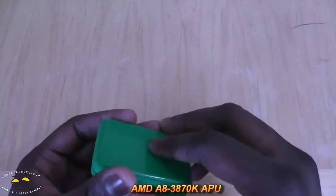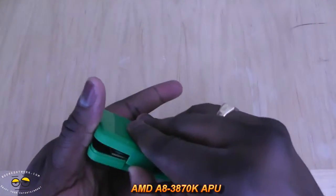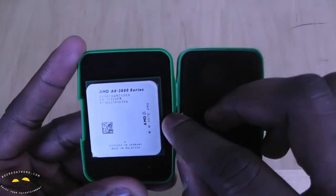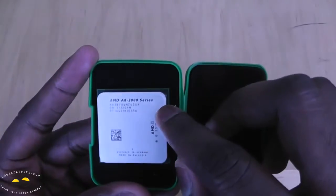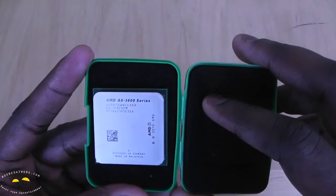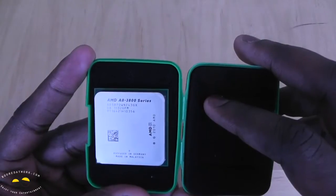No special packaging or anything. Just giving you a look. So here it is. This is the A-Series APU. This is the A83800 series. This is actually the A8-3870K APU.